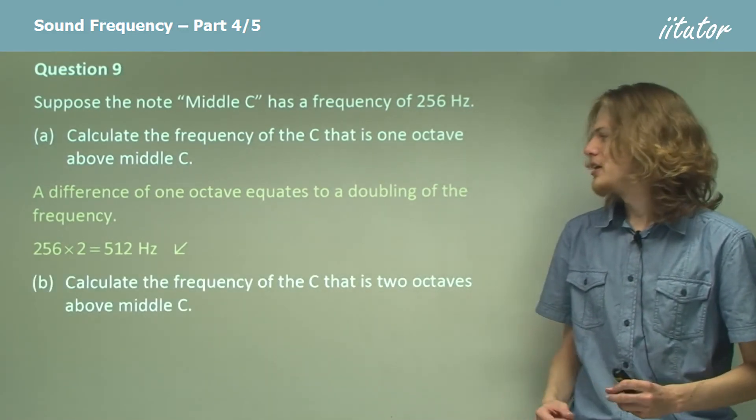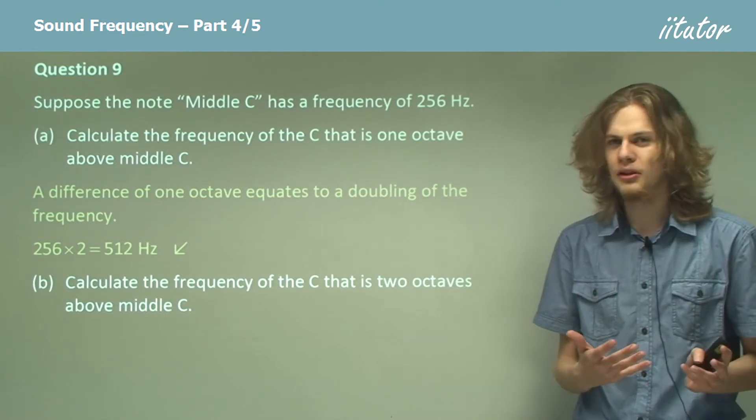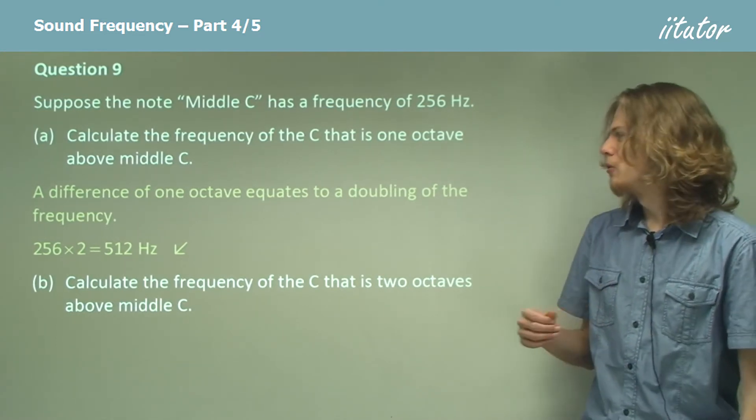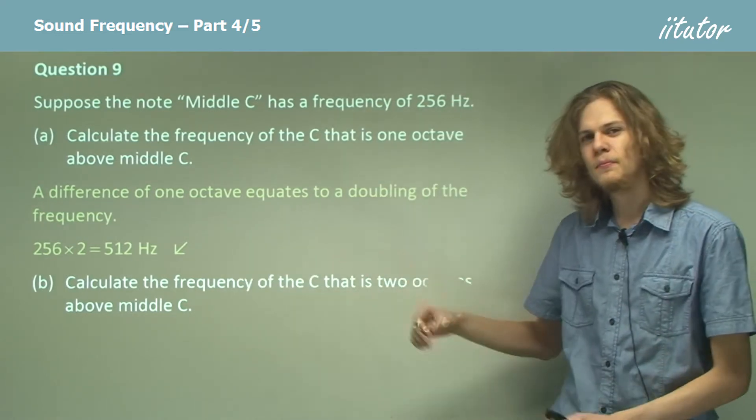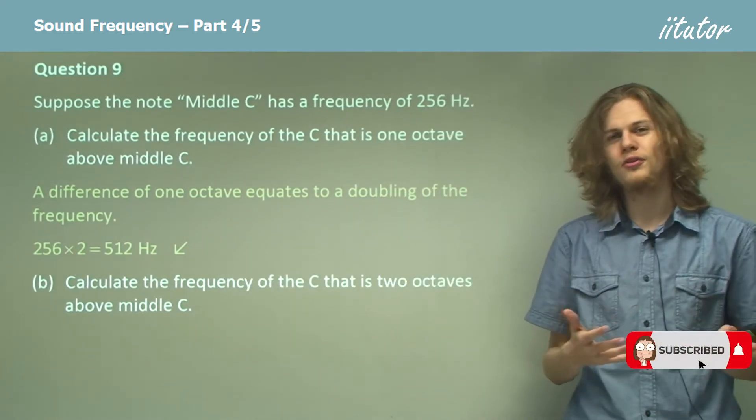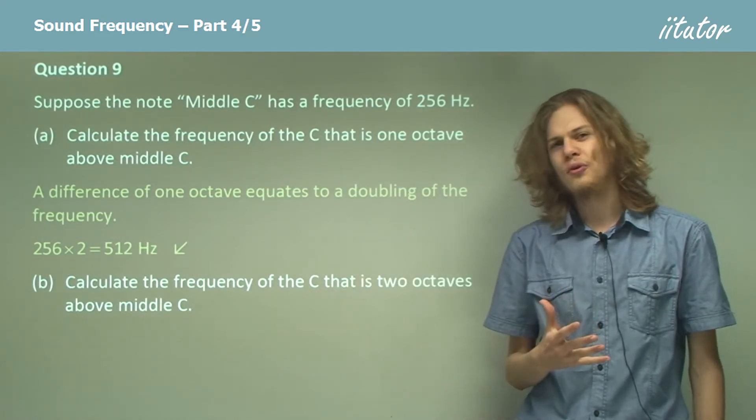Calculate the frequency of the C that is two octaves above middle C. Now at first we might think, well there are 256 between these first two C's, so surely there's going to be 256 Hertz between these next two C's, but that's not quite right.